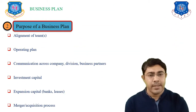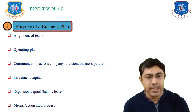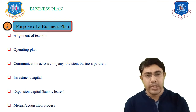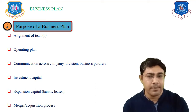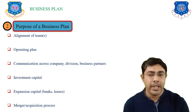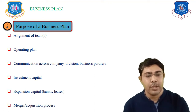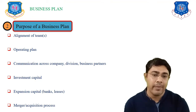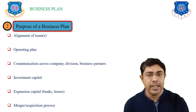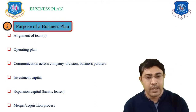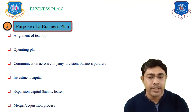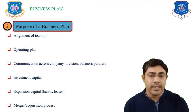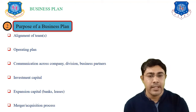Next is the purpose of the business plan. There are several purposes: first is alignment of teams, second is operating plans, third is communications across the company, business departments, business partners, etc., fourth is investment capital, fifth is expansion capital like rents and leases, and the last is the merger and acquisition process. These are all things we have to consider in our business plan.